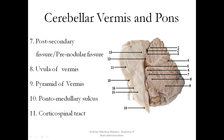Then you have the post-secondary fissure, or pre-nodular fissure, which separates the nodules from the uvula. You have the uvula of the vermis, then the pyramid of the vermis. Then the pontomedullary junction — this is the pons, this is the medulla, and this is the midbrain. The superior cerebellar peduncles connect the midbrain to the cerebellum, and those fibers pass above.